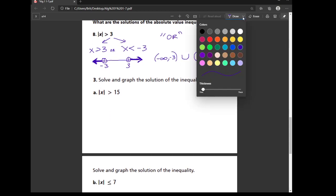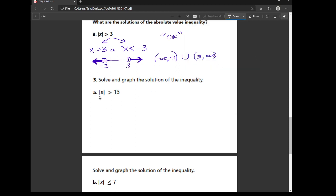Alright, so now number 3 gives us another one and it asks us to graph it this time. So again, the absolute value is alone. So I split it into two expressions. The first one without the bars. The second one, I change the sign. And then I flip the inequality backwards.